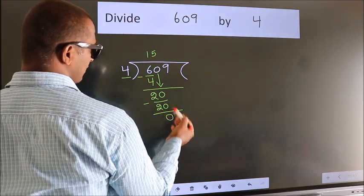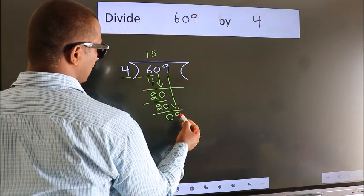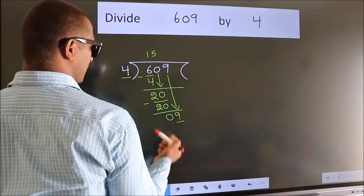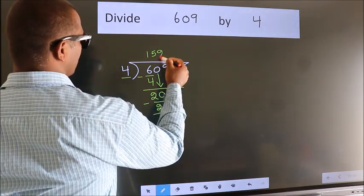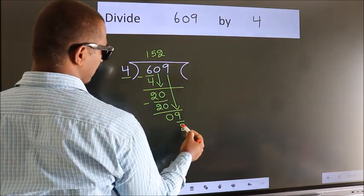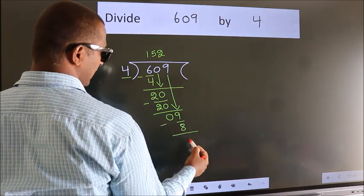After this, bring down the beside number. So, 9 down, giving us 9. A number close to 9 in the 4 table is 4 twos, which is 8. Now we subtract. We get 1.